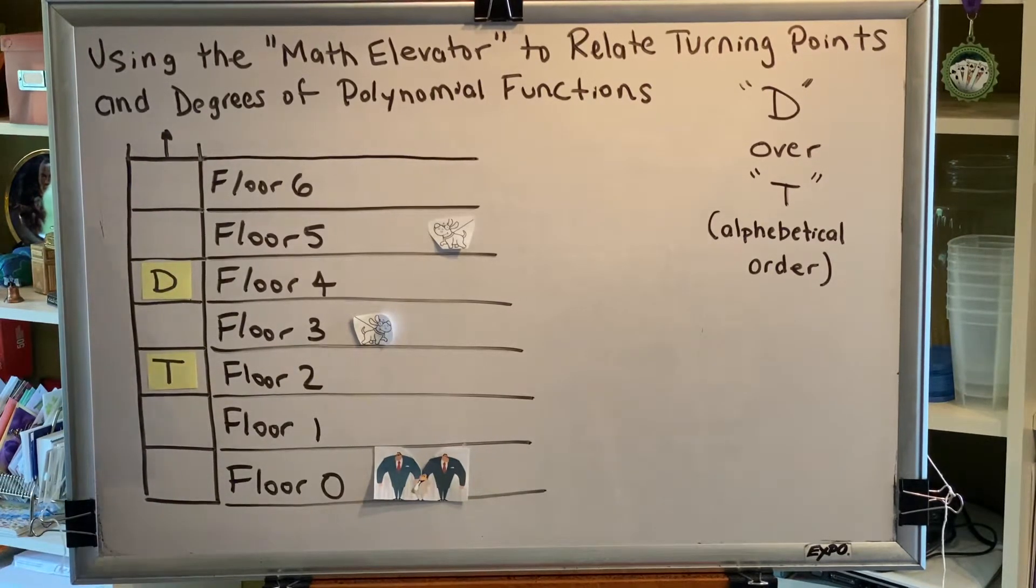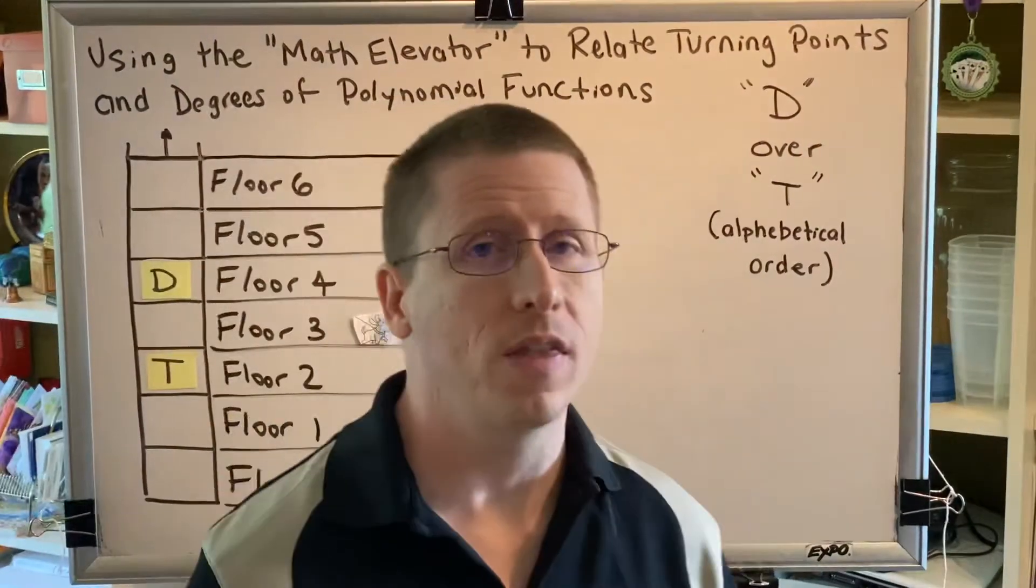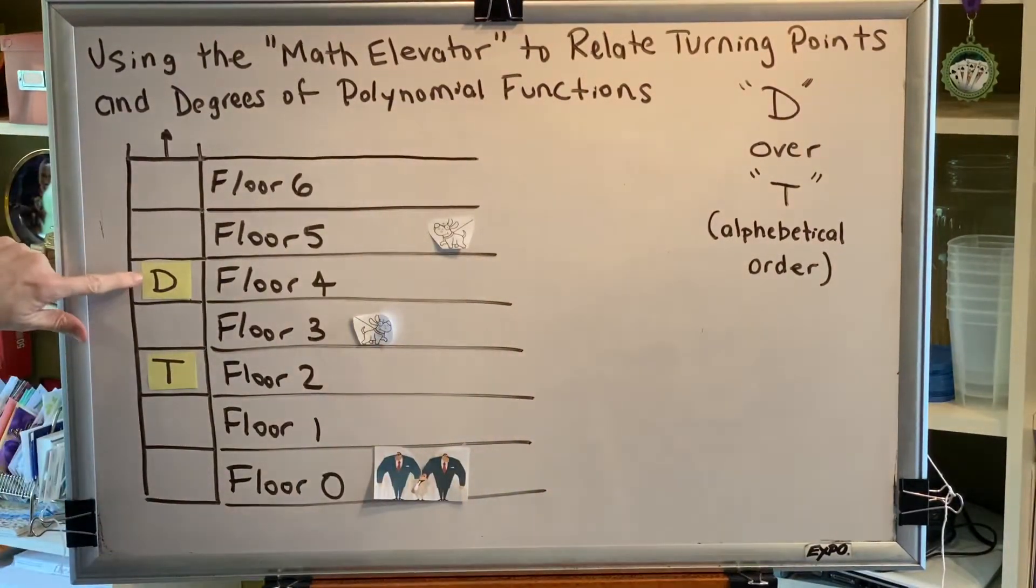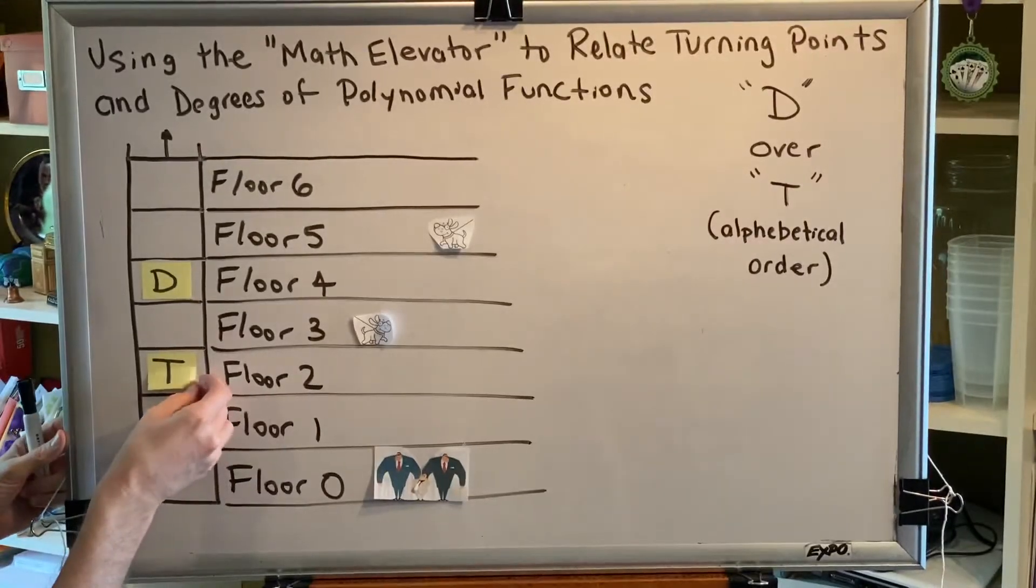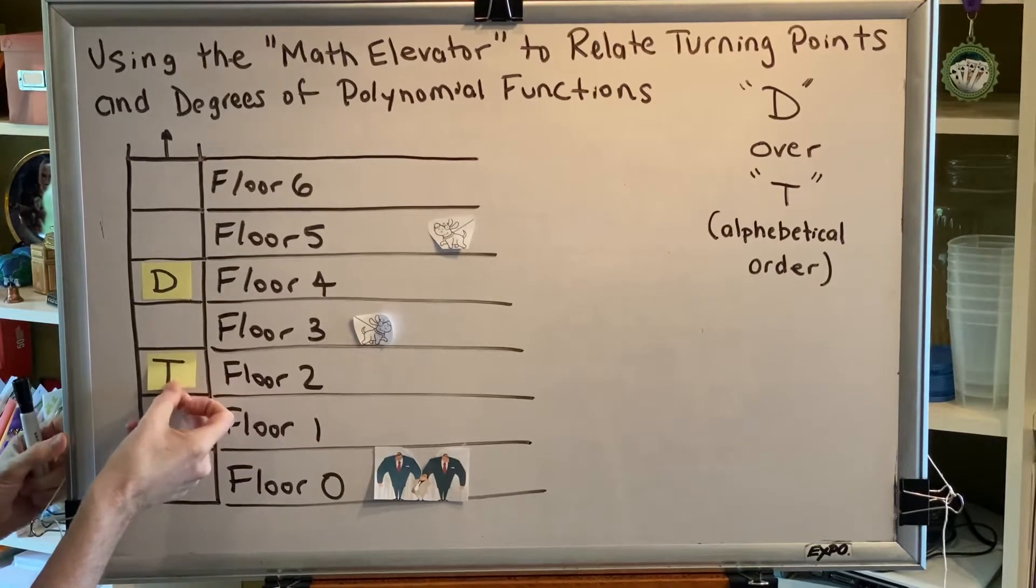This elevator has two cars within the same elevator shaft. There is a D car and there is a T car. Both of these cars can move up and down, but they can't pass each other.